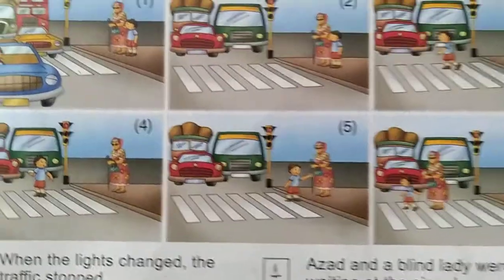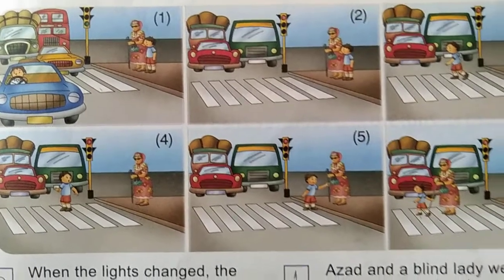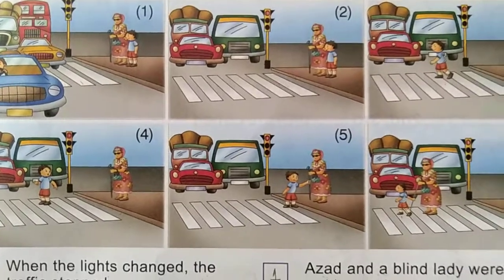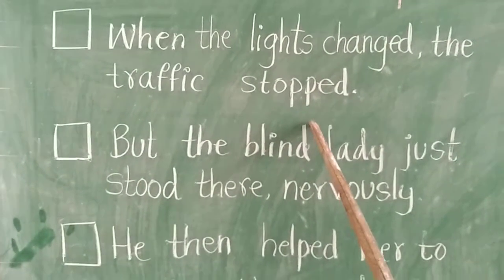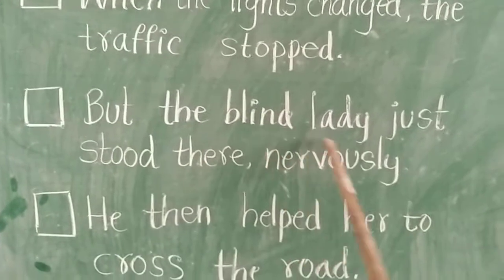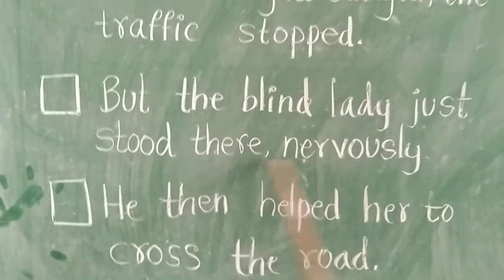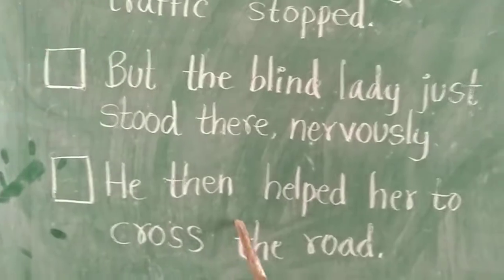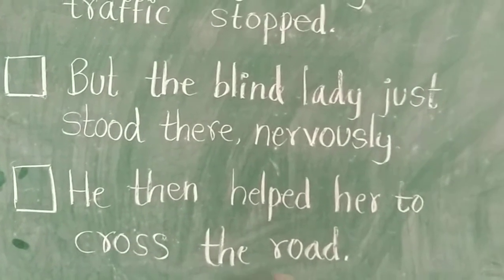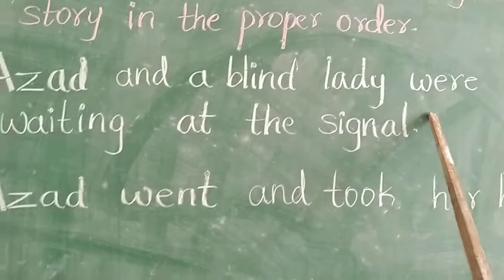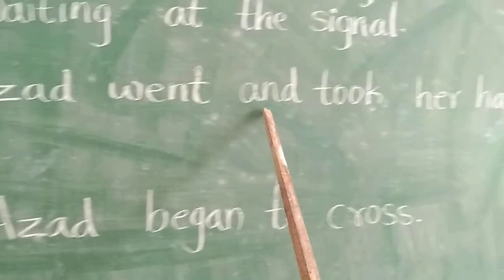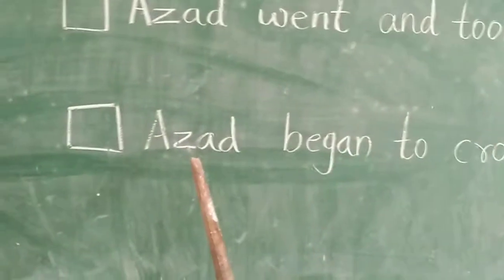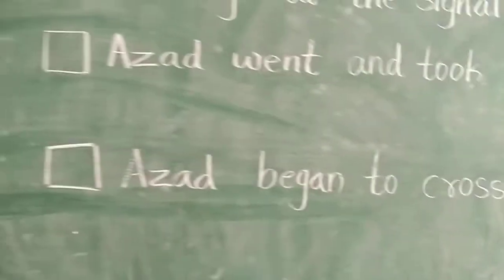Let us write this story in proper order. Let us see the sentences below. First: When the lights changed, the traffic stopped. Below that: But the blind lady just stood there nervously. Next: He then helped her to cross the road. Next: Azat and a blind lady were waiting at the signal. Next: Azat went and took her hand. And the last sentence: Azat began to cross.